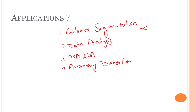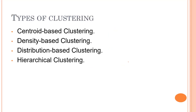These are just a few applications to show how important clustering algorithms are. Now let's look at the different kinds of clustering. We have basically four types: centroid-based, density-based, distribution-based, and hierarchical. Going through each technique deeply would require a separate course, so we'll get an overview of each and then focus on a specific algorithm.